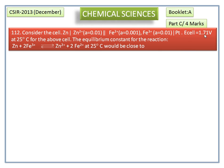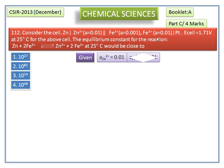Consider the cell with E°cell equal to 1.71 V at 25 degrees Celsius. The equilibrium constant for the reaction at 25 degrees Celsius would be close to the given options. The given values are activity of Zn²⁺ equals 0.01, activity of Fe²⁺ equals 0.001, activity of Fe³⁺ equals 0.01, and E°cell value equals 1.71 V.